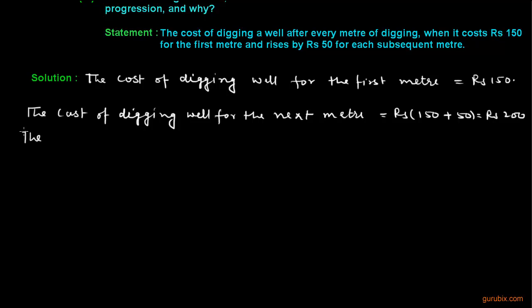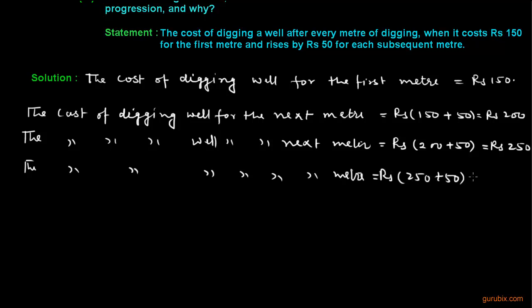Same as, we can find the cost of digging well for the next meter: Rs 250 for the next meter. Same as, the cost of digging well for the next meter will be Rs 250 plus 50, and that will be equal to Rs 300.